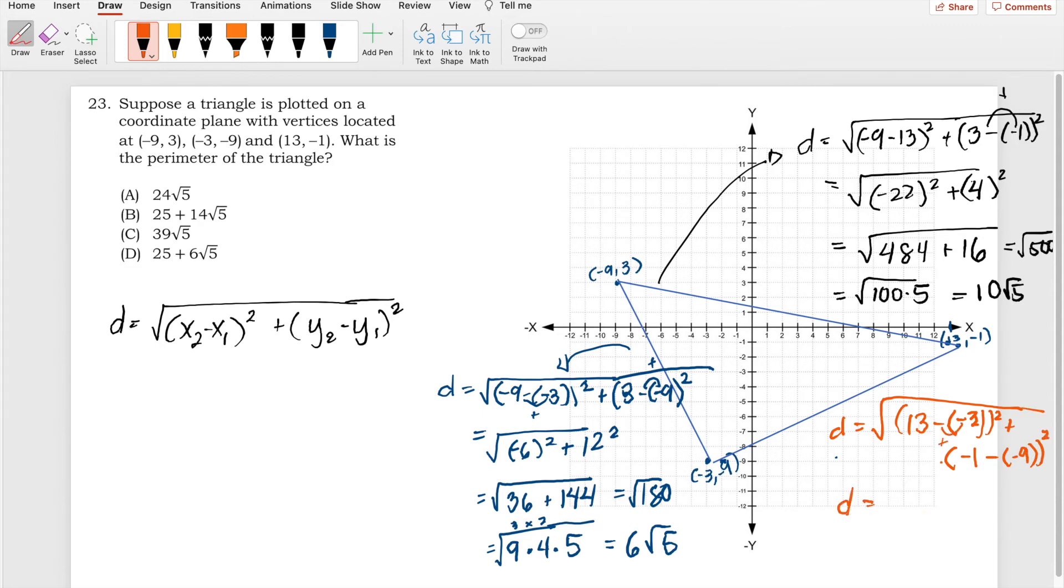And this will give us 256 plus 64, or simply 320, square root of 320.